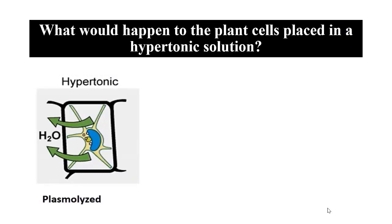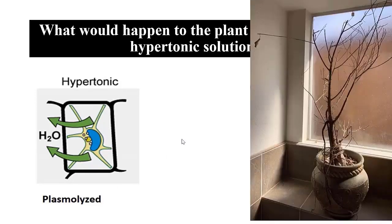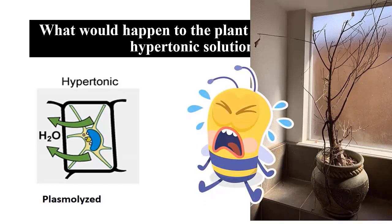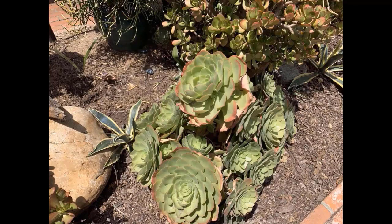What would happen to plant cells placed in a hypertonic solution? As you see here, the water flows out of the cell, so the cytoplasm will shrink. The plant will wilt and eventually die. This is why, if we have a plant, we water it with pure water. We don't fertilize plants every day because it would change the plant cell conditions. We do it maybe once or twice a year — but we want to keep our plants healthy and upright, so we just water with pure water.